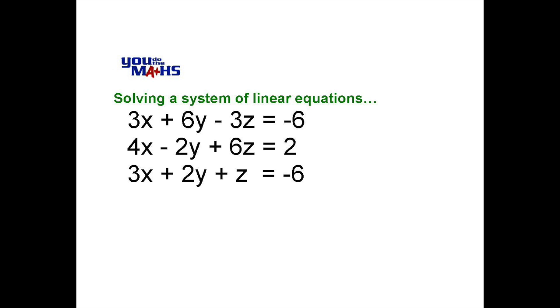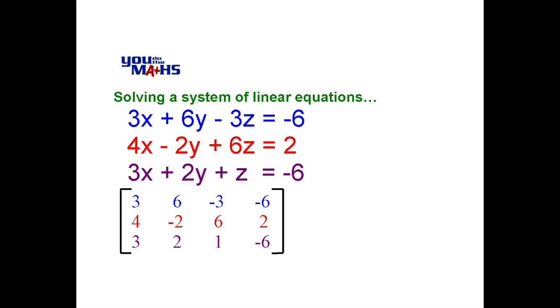To solve this system of linear equations, we'll place these values into a matrix. So what we do is take the coefficients for the first equation: 3, 6, and negative 3, placing them in row 1, and then the constant on the right-hand side makes the end of row 1.